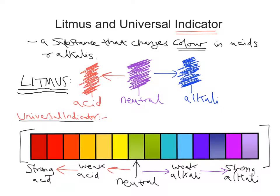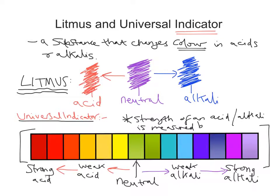So let's talk about pH. The strength of an acid or alkali is measured by the pH scale. Each universal indicator colour is given a number called the pH value, and so universal indicator can tell you the pH of a solution. We assign a pH value to all of these colours. Neutral has a value of 7 — so a neutral substance has a pH value of 7. If we get a universal indicator colour of green, that shade of green, we say it has a pH of 7.